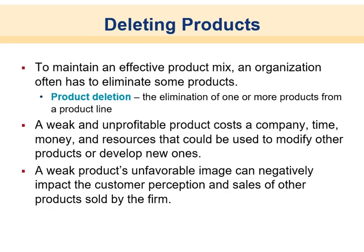Sometimes you have to delete products to maintain an effective product mix. Product deletion is the elimination of one or more products from a product line — often because a weak, unprofitable product costs the company time, money, and resources. A weak product's unfavorable image can negatively impact customer perception. An interesting example is McDonald's McRib: when it first came out they intended to keep it, but it tailed off, so they now use selective deletion to make it seem scarce, driving demand when it returns.